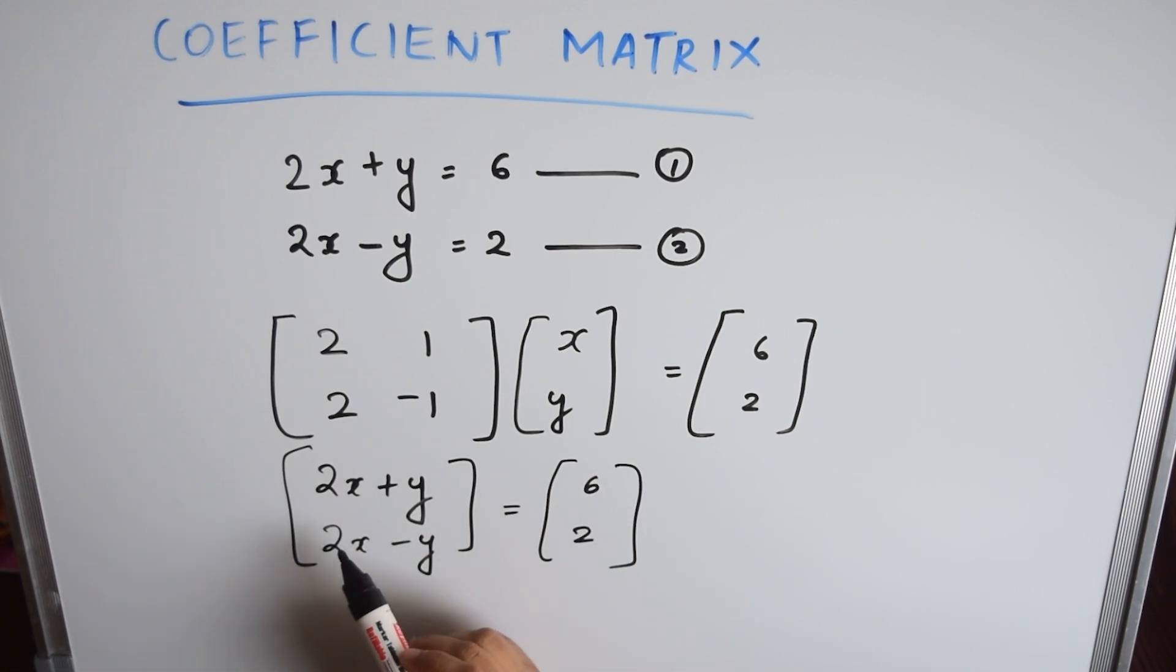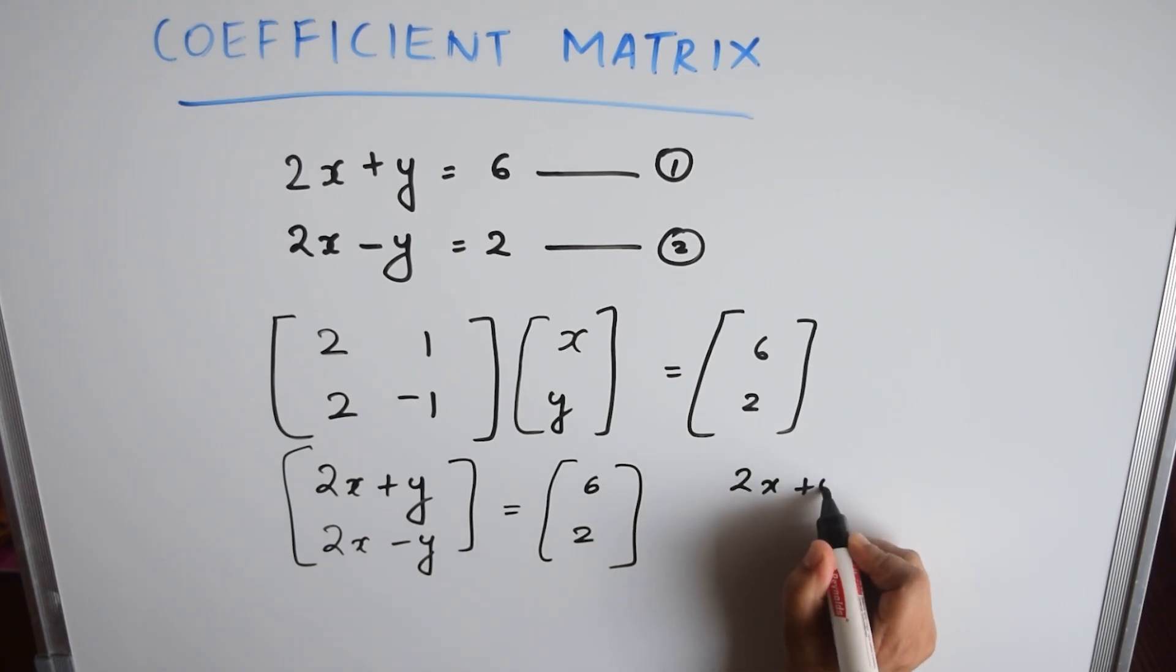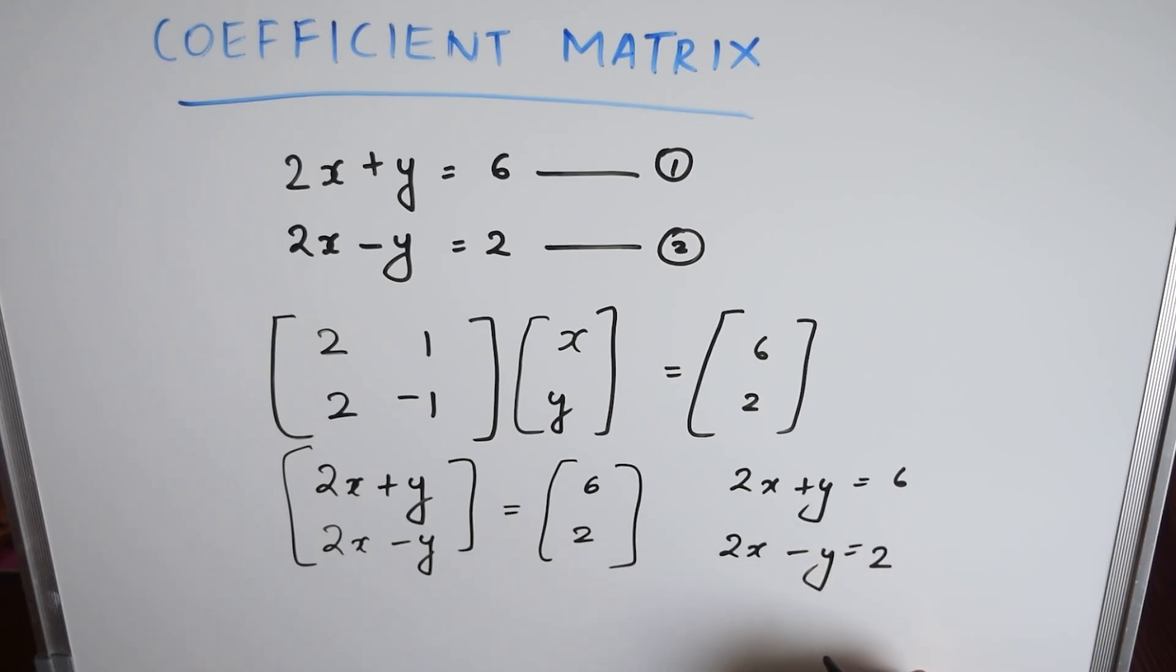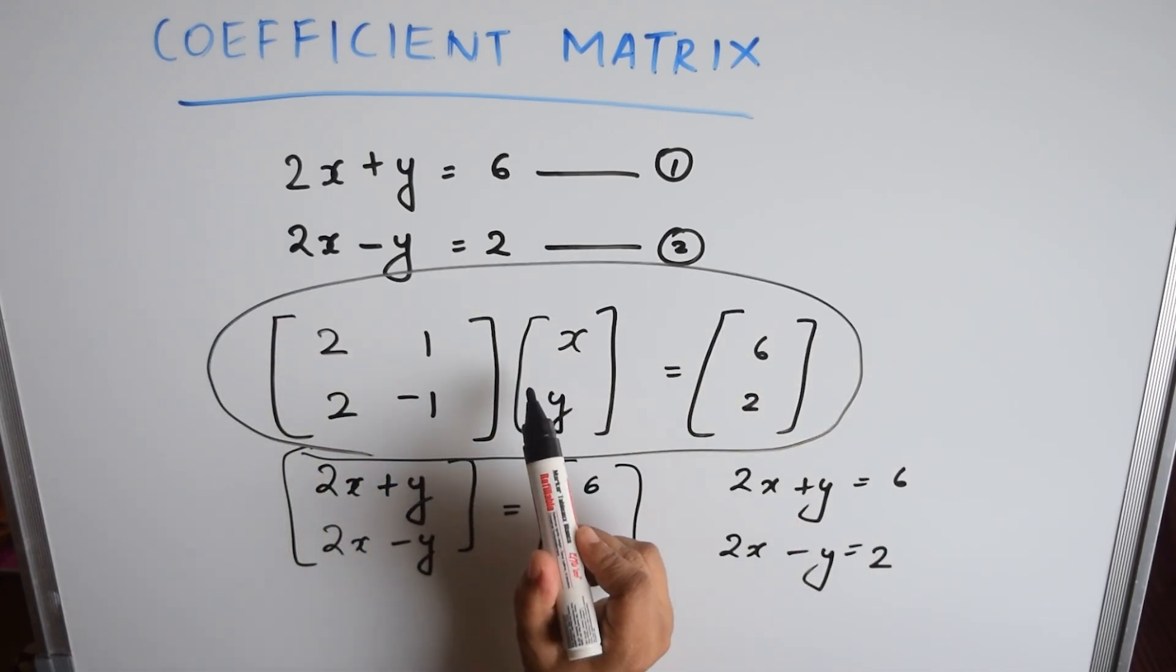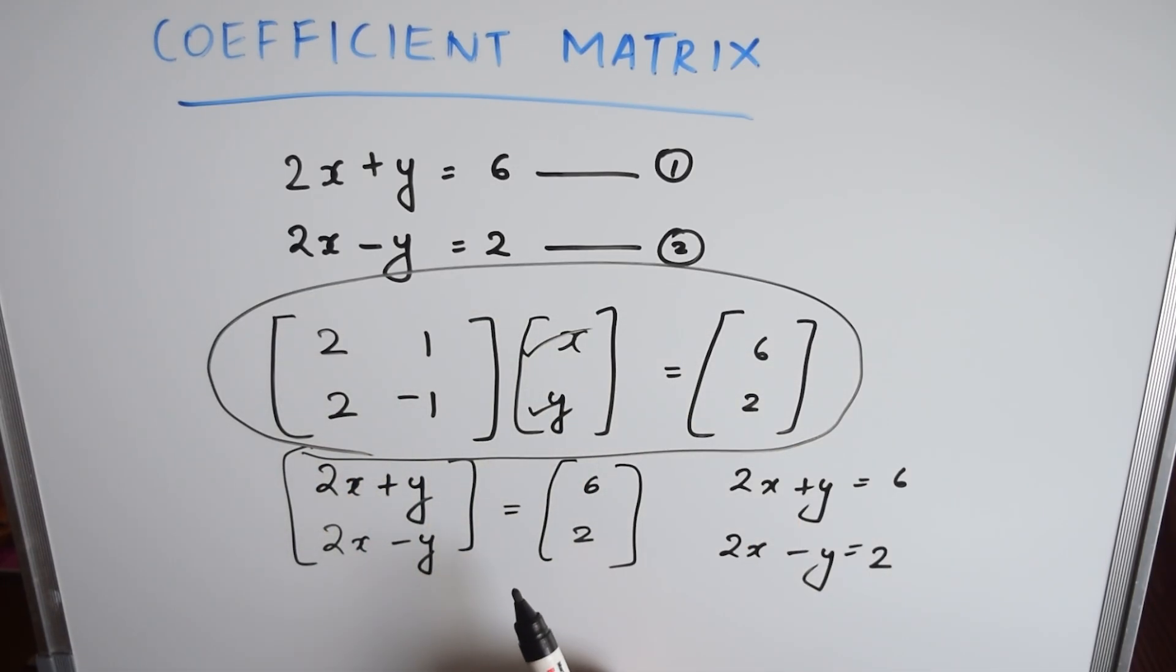Or, you can equate 2x plus y is equal to 6 and 2x minus y is equal to 2. So, this is how it is equivalent to the matrix form. Once you get it in the matrix form like this, now you can find the value of x and y using matrix methods.